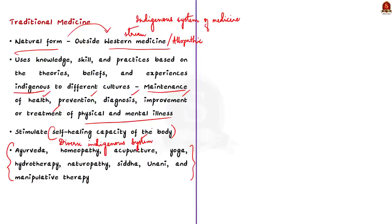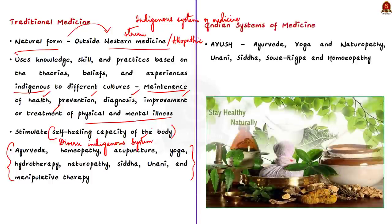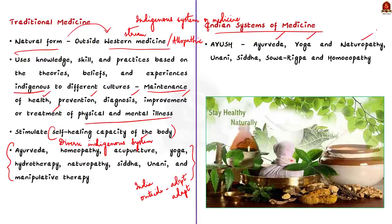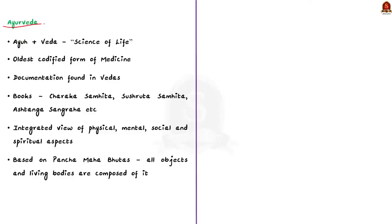Some of these systems originated in India and others originated outside India but were adopted and adapted over time. Together, the Indian systems of medicine include Ayurveda, Yoga and Naturopathy, Unani, Siddha, Sova Rigpa, and Homeopathy — collectively known by the acronym AYUSH.